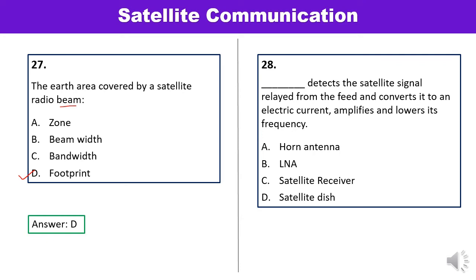Question 28: Which component detects the satellite signal relayed from the feed, converts it to an electric current, amplifies it, and lowers its frequency? Options are horn antenna, low noise amplifier, satellite receiver, and satellite dish. The low noise amplifier detects the satellite signal relayed from the feed, then converts, amplifies, and lowers the frequency. Answer B is correct.